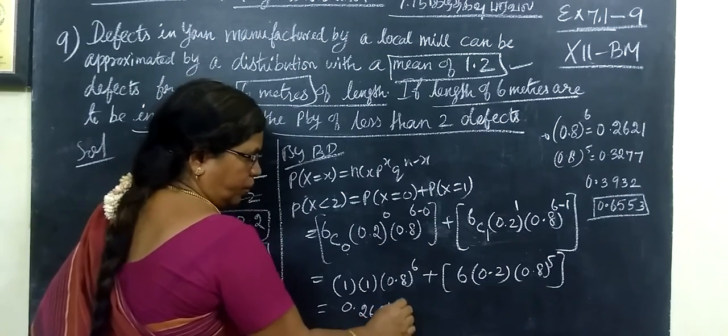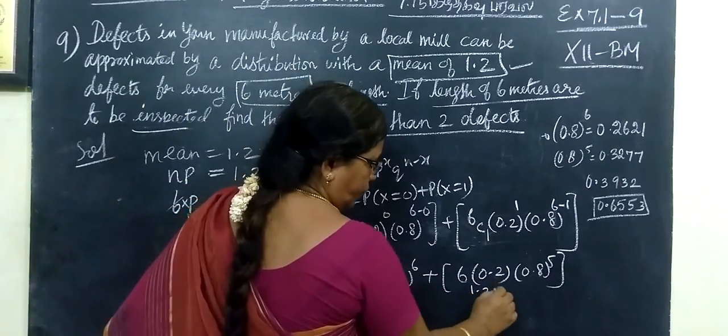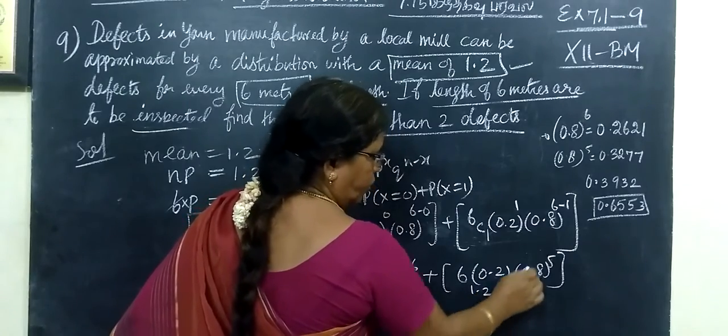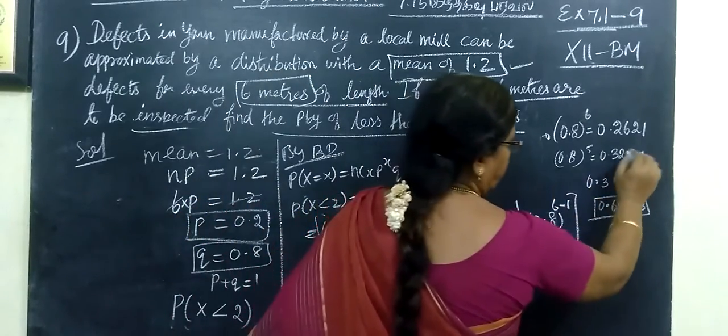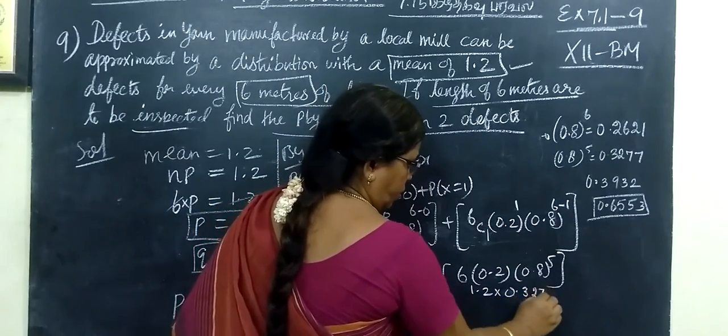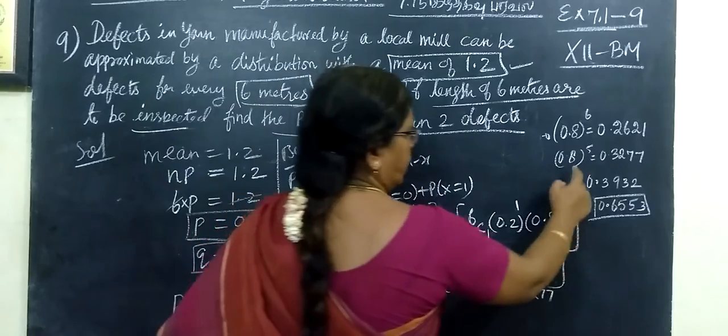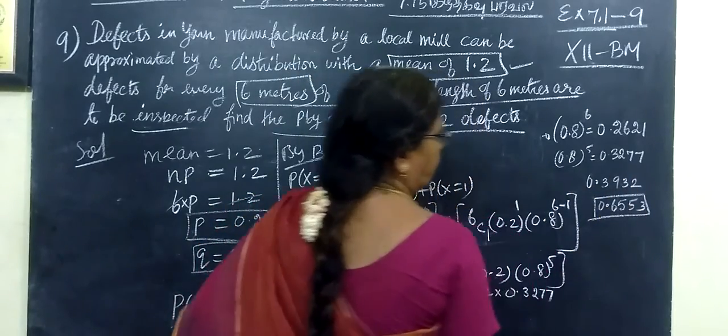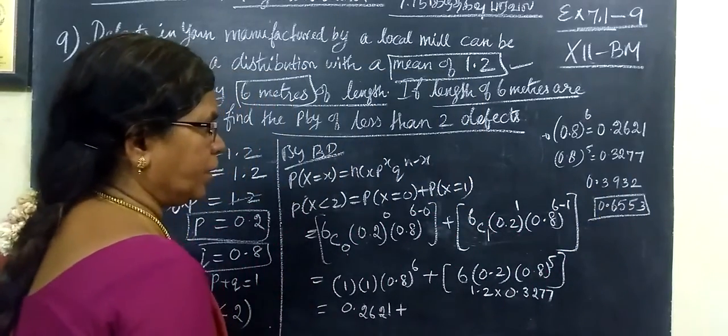You can use the calculator. 0.262, 6 into 0.2 is 1.2, 0.8 power 5. The answer is 0.327. If you multiply, you get 0.3932.